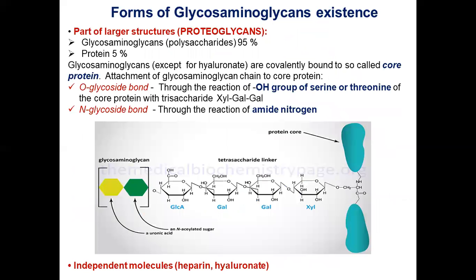Glycosaminoglycans, except for hyaluronic acid, are covalently bound to a so-called core protein to form proteoglycans. Glycosaminoglycan chains bind to the core protein by O-glycosidic bonds and N-glycosidic bonds.